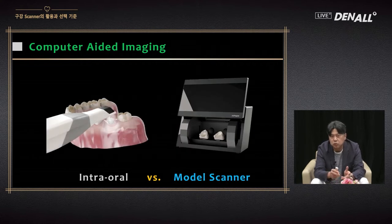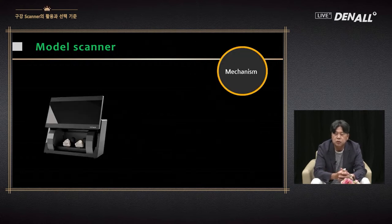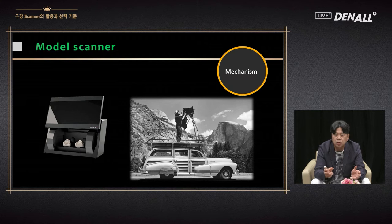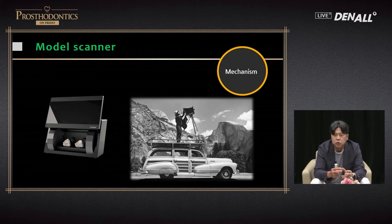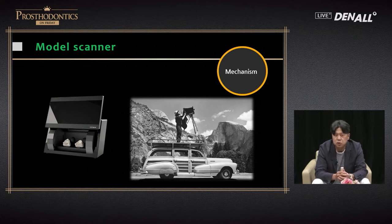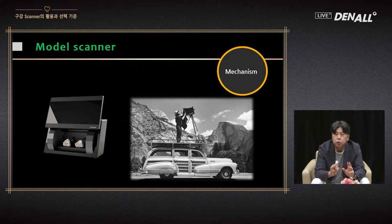A model scanner can scan almost the full arch model or impression. It is rather bulky, so the price is rather low. It has been used for a long time in labs. The advantage of a model scanner is that the filming elements are big, so the data amount is quite large from one picture, covering a large area and reducing distortion. Cross arch stability is very good.